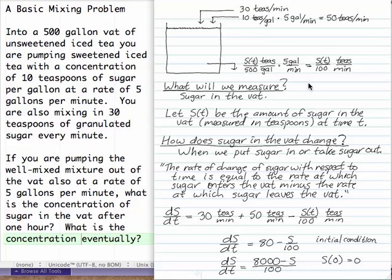So first to set this up, what are we going to measure? First decide what you're going to measure. You're going to measure sugar in the vat. Let S of T be the amount of sugar in the vat measured in teaspoons at time T.